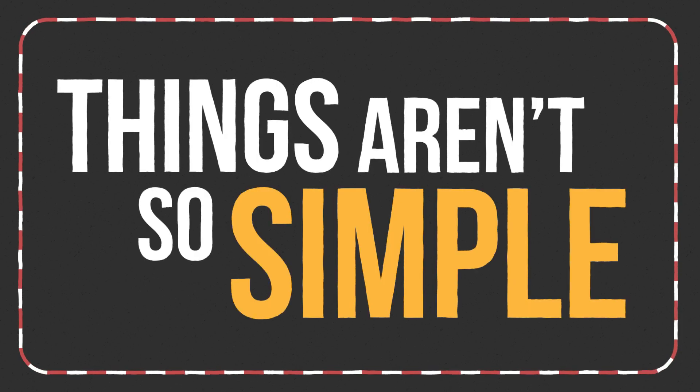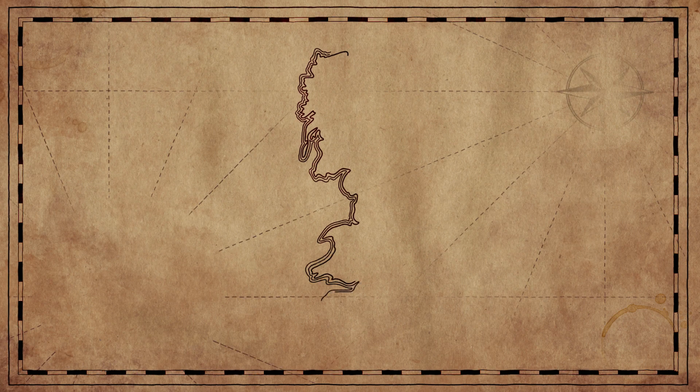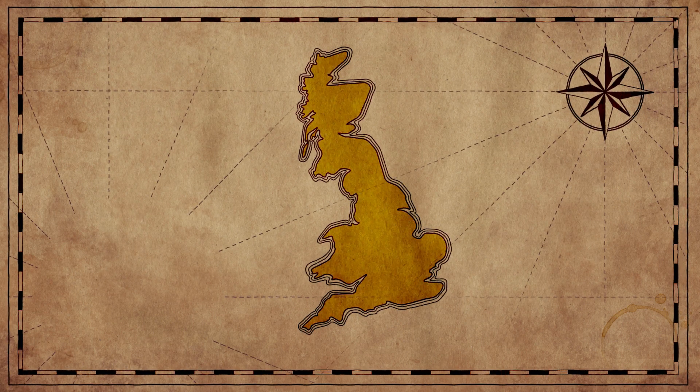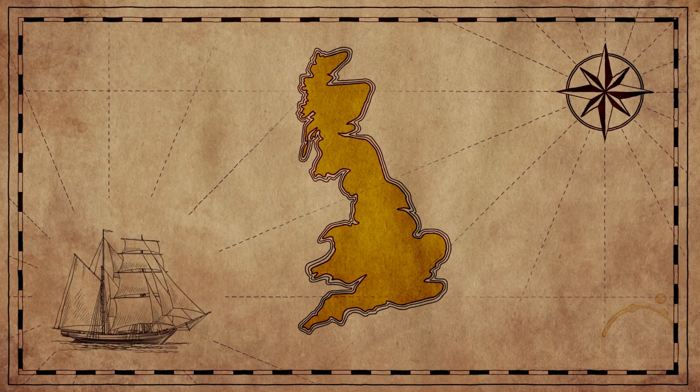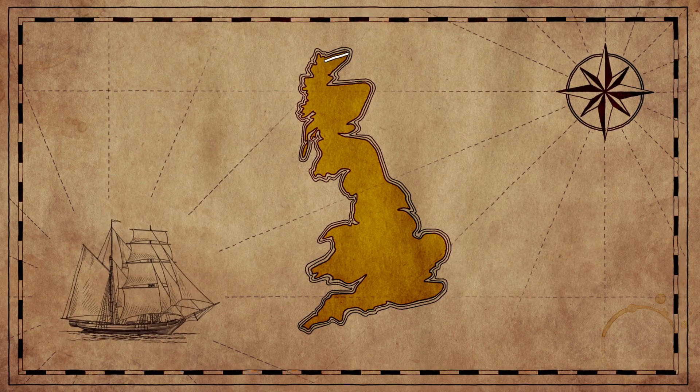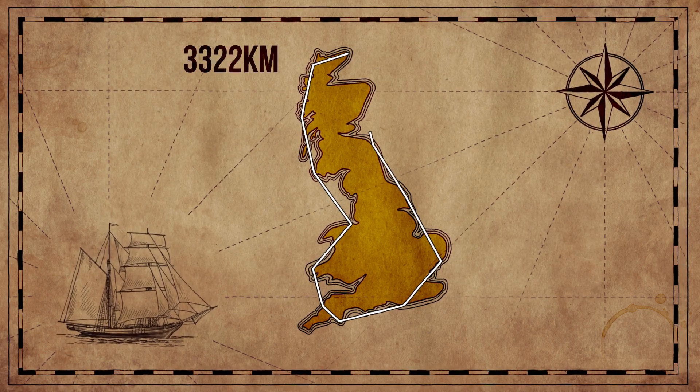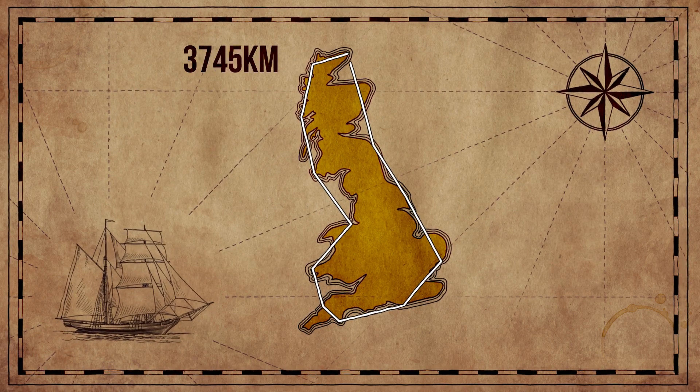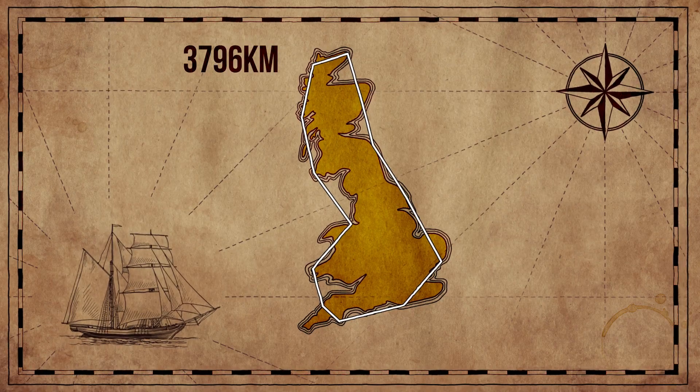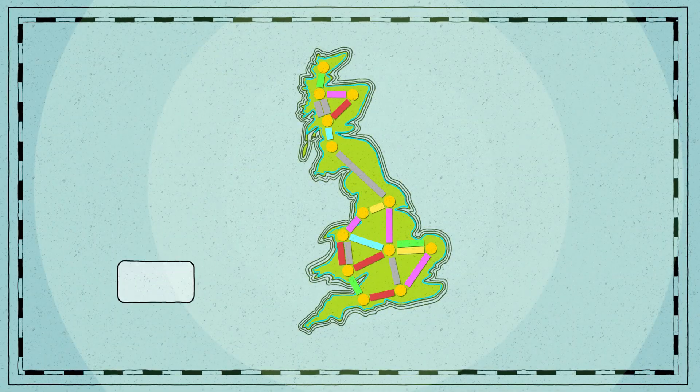However, when dealing with complex systems, things aren't so simple. Take the case of the coastline of Britain. If we ask the captain of a large ship measuring the length of the coastline with a nautical chart, they will tell us that it is a certain length.